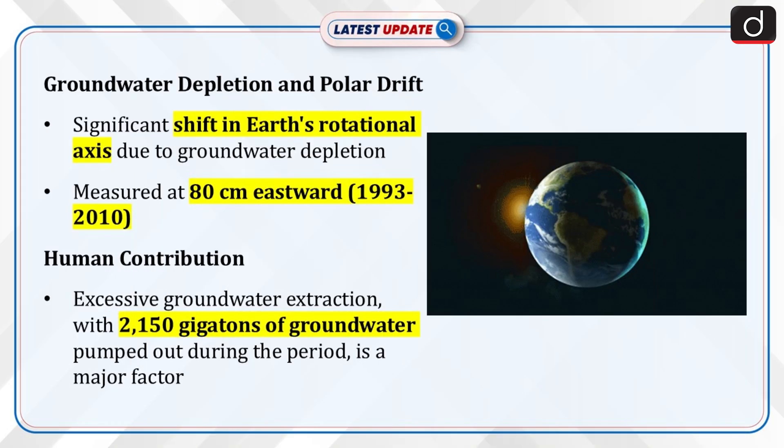A recent study reveals that groundwater depletion has caused a significant shift in Earth's rotational axis, i.e. polar drift. The shift, measured at 80 cm eastward, occurred between 1993 and 2010. Human activity, particularly excessive groundwater extraction, has contributed to this change, with an estimated 2,150 gigatons of groundwater pumped out during this period.